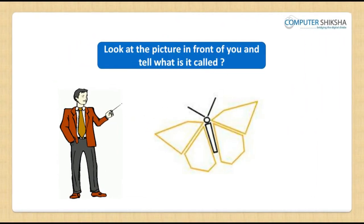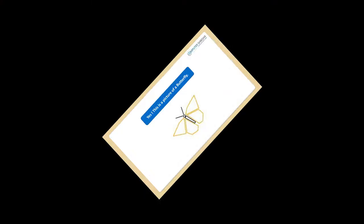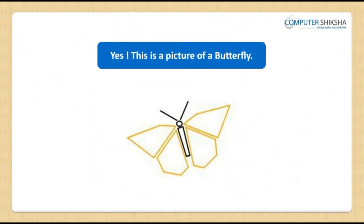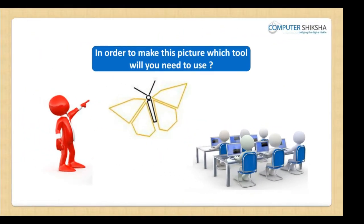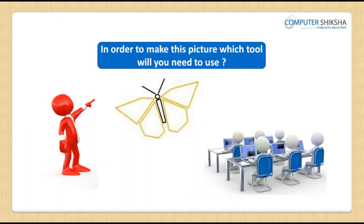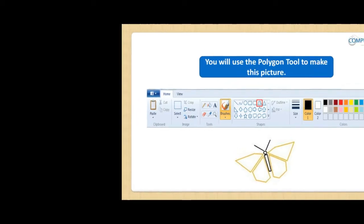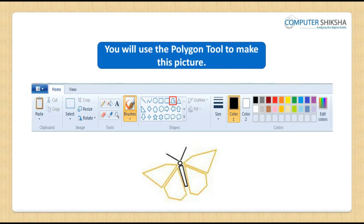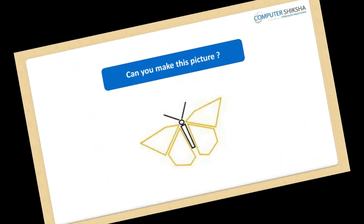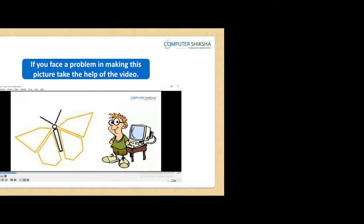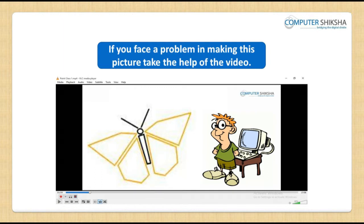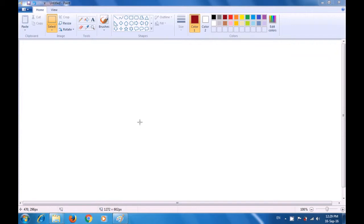Look at this picture in front of you and tell what it is called. Yes, this is a picture of a butterfly. In order to make this picture, which tool will you need to use? You will use the Polygon Tool to make this picture. Can you make this picture? If you face a problem, take the help of the video. Let us now watch this video and see how we can use the Polygon Tool to make a picture of a butterfly.